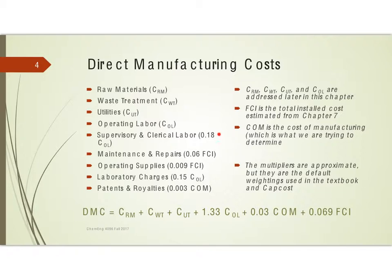Some costs are related to others. Supervisory and clerical labor is estimated at about 18% of general operating labor cost. Maintenance and repairs are proportional to the fixed capital investment (FCI) from chapter 7. Operating supplies are also proportional to FCI. Lab charges are most closely related to operating labor costs. Patents and royalties are generally a very small percentage of the total cost of manufacturing, COM, which is what we're trying to figure out.